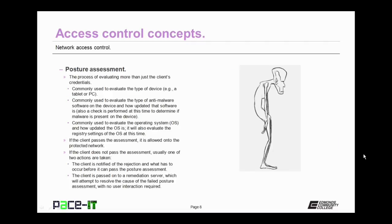Access control can also be achieved through posture assessment. This is the process of evaluating more than just the client's credentials. Commonly, posture assessment is used to evaluate the type of device that is requesting a connection. Is it a tablet, or is it a PC, or is it a mobile phone, so on and so forth. Posture assessment can be used to evaluate the type of anti-malware software that's on the device and how updated that software is. During this process, a check is also performed to determine if malware is present on the device.